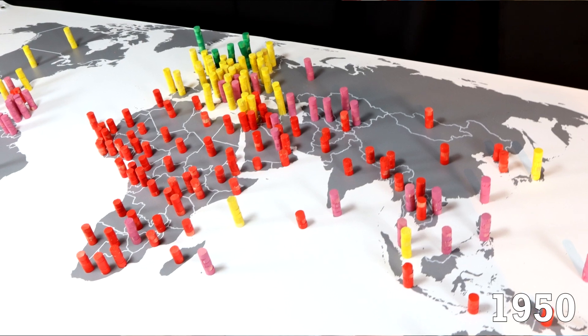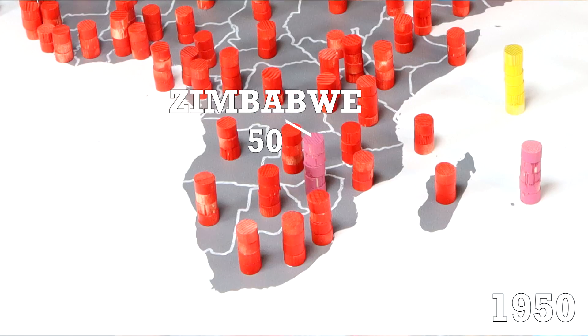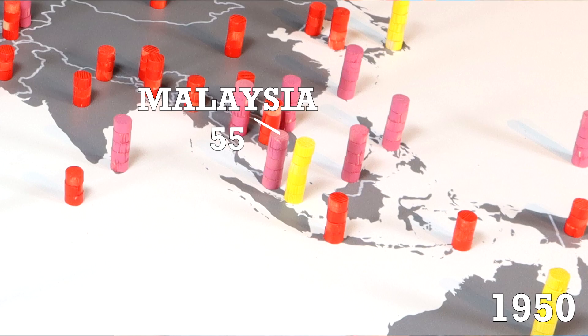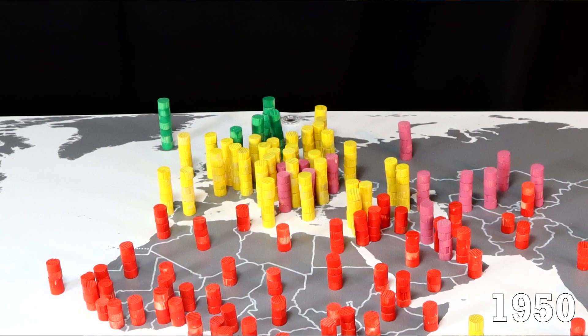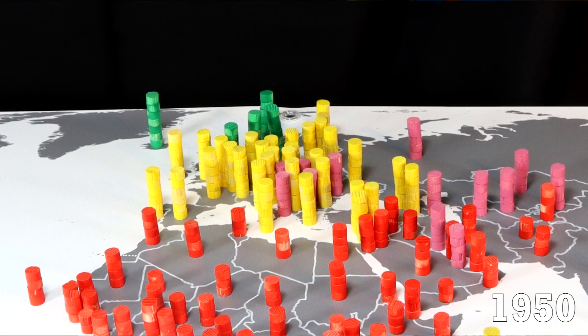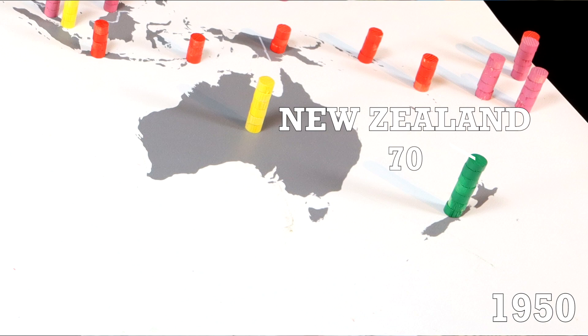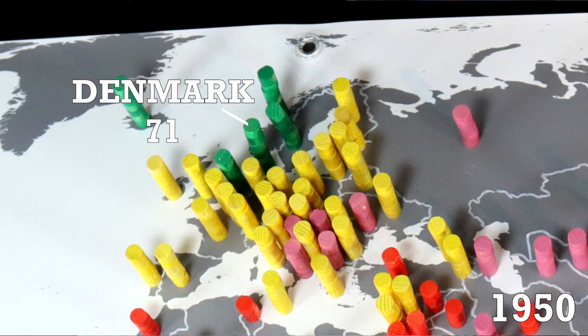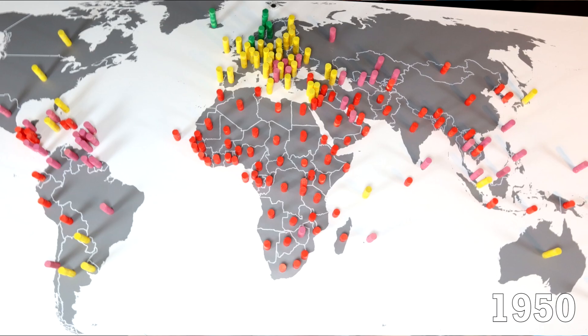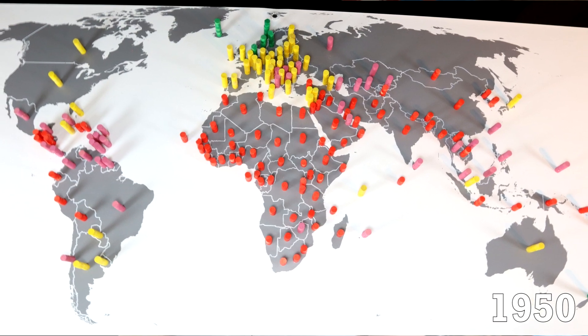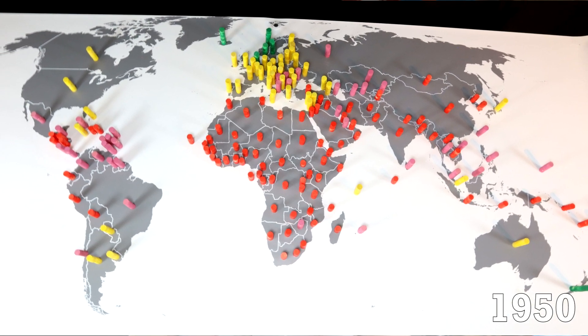In nations where the life expectancy is above 50, 5 pink markers are placed, such as in Brazil, Zimbabwe and Malaysia. In most of Europe, the number is above 60, and marked in yellow. Some of the most well-off nations in the world have already passed 70, and are marked in green. This map is based on current-day geographical borders and divisions. You can find more geographical clarifications in the description below. And with that, we start time.